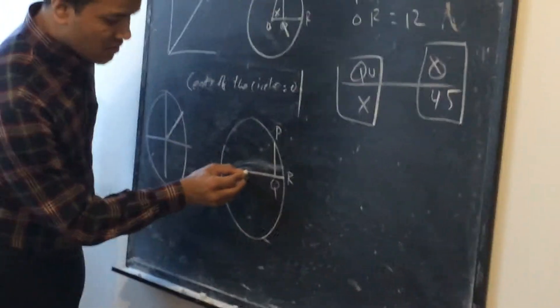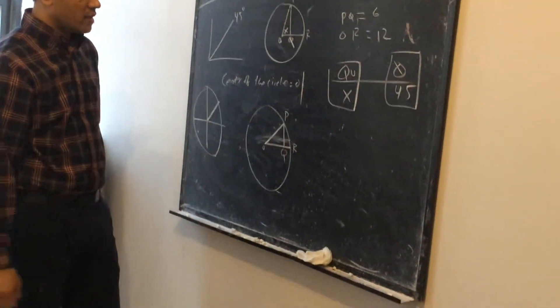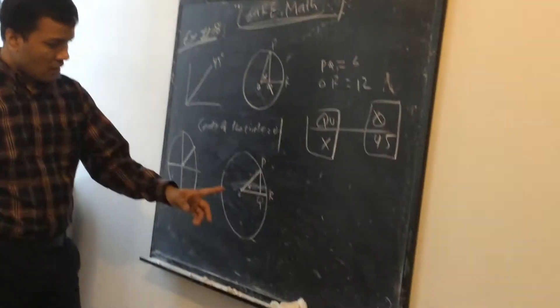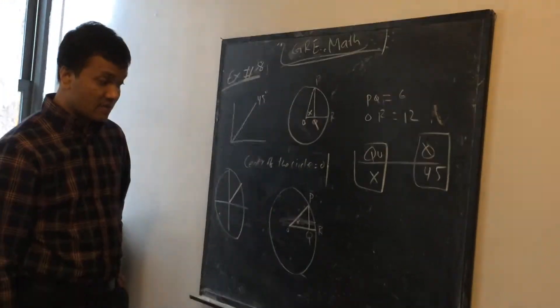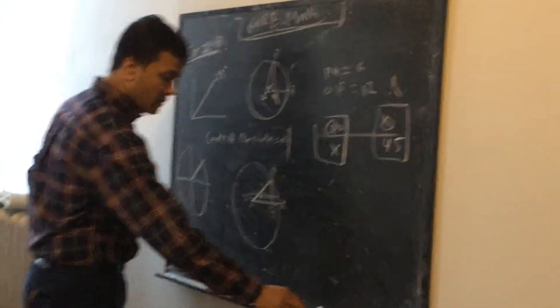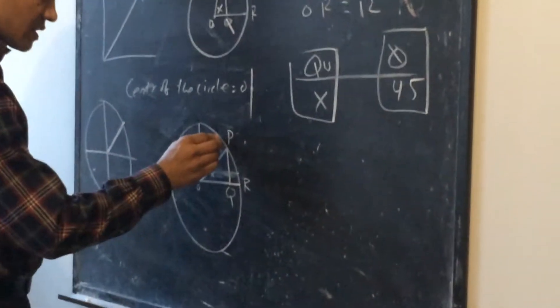Now you connect this. Alright, now this is X. This looks like less than 45 degrees. Why? Because 45 degrees - look, this is 90 degrees, and 45 degrees look like this.